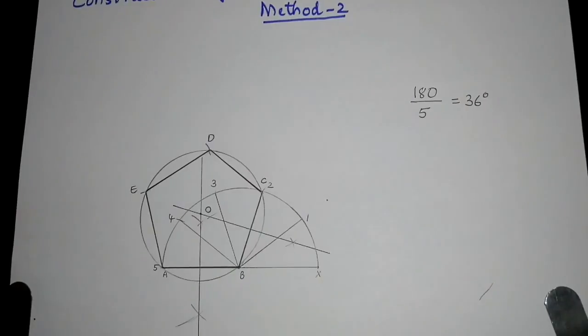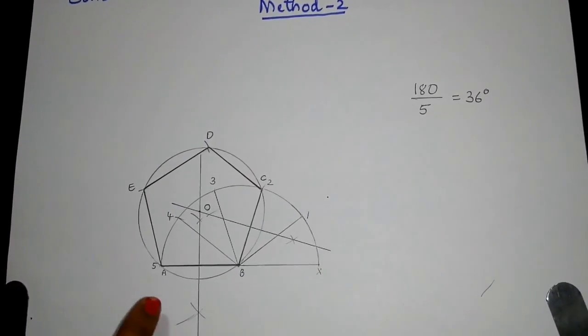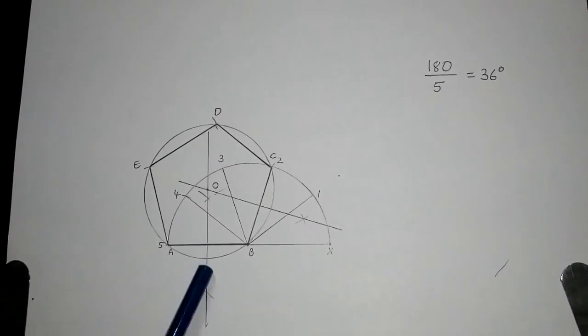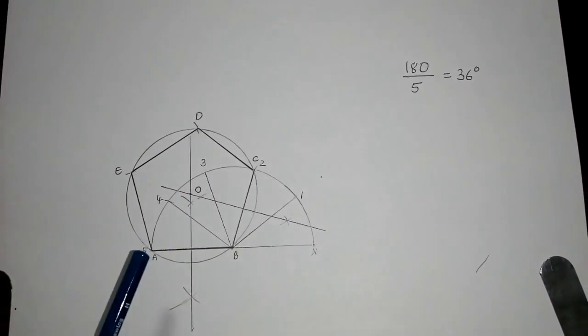So this is our required pentagon with side 40mm. We can repeat the same procedure for different polygons.